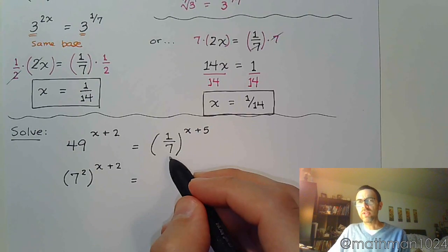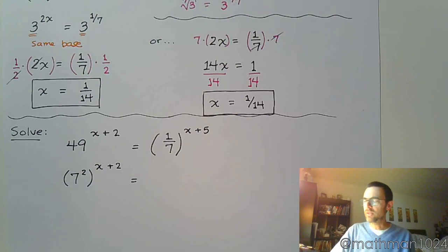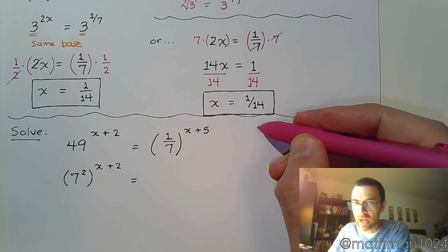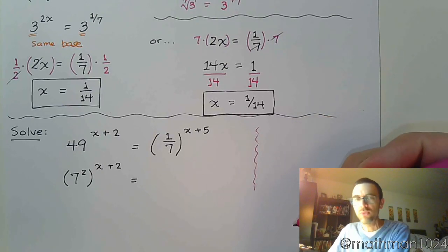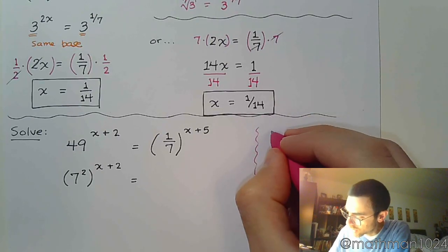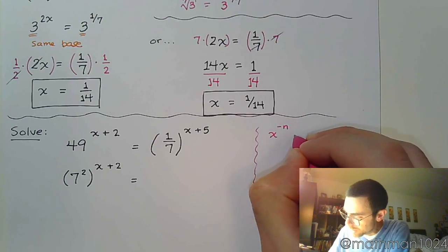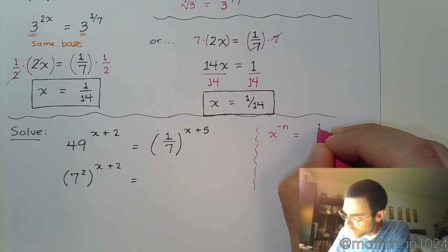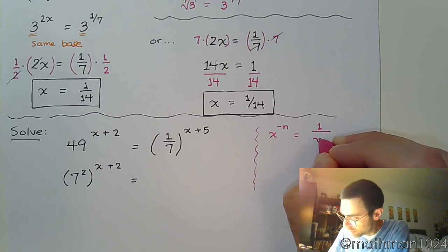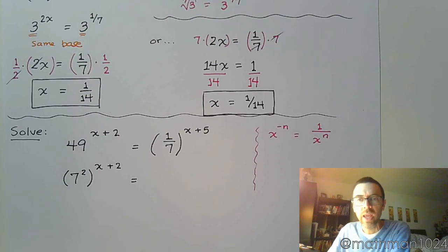What about 1 over 7? See, I think this is another thing that students tend to forget is how to work with fractions and powers. So here's the note for us. x to the negative n power means 1 over x to the n.